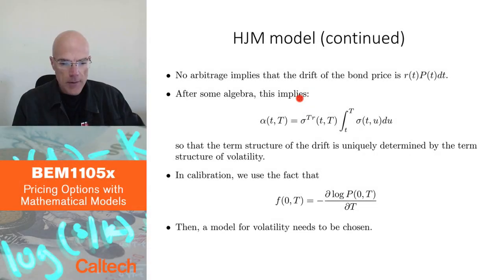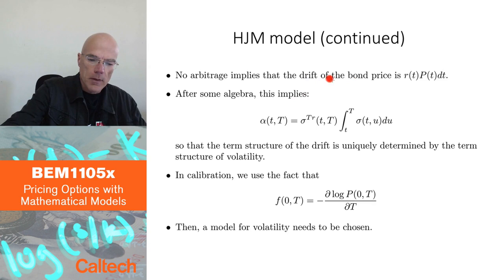So that was really the main result of Heath, Jarrow, and Morton. They said that in order not to have arbitrage, they computed what alpha has to be. And the way they computed that, they put the drift of the bond price using Ito's rule.